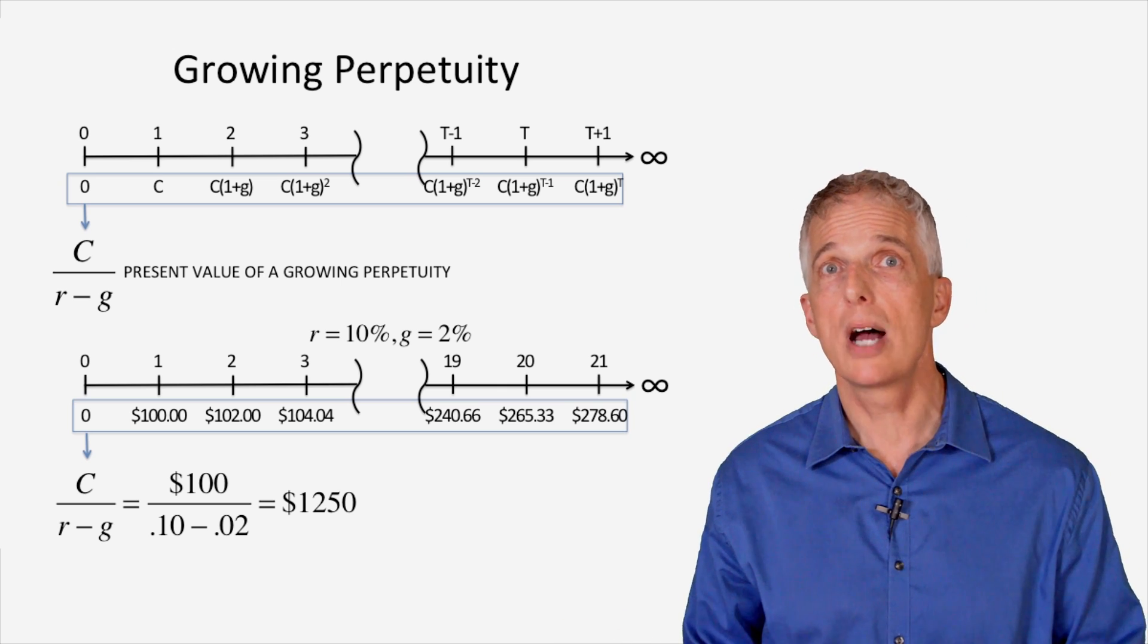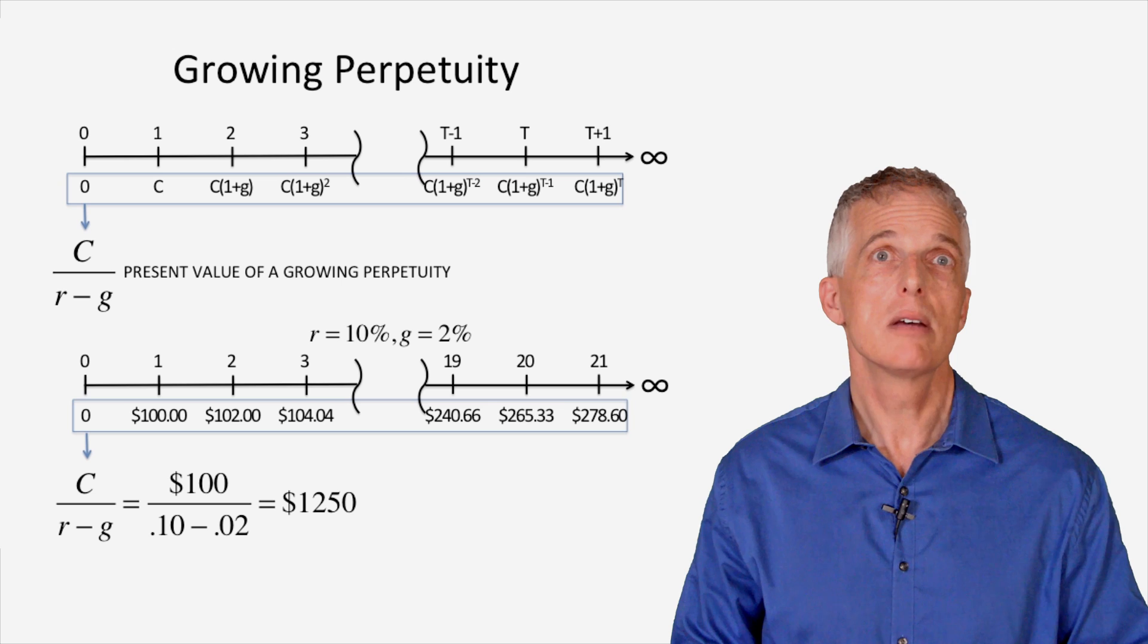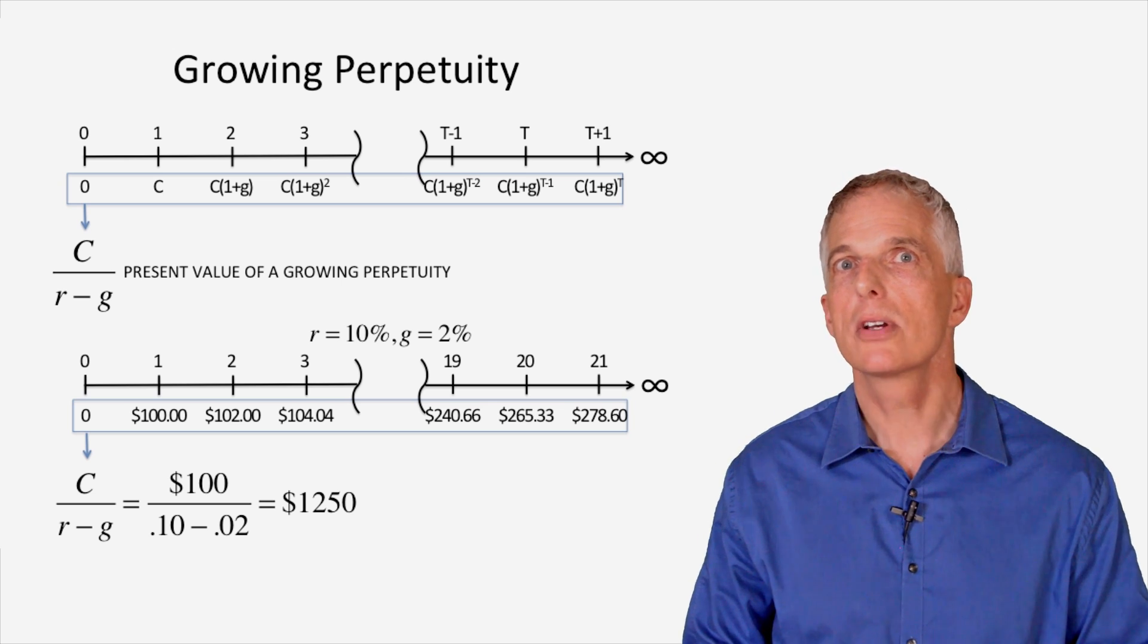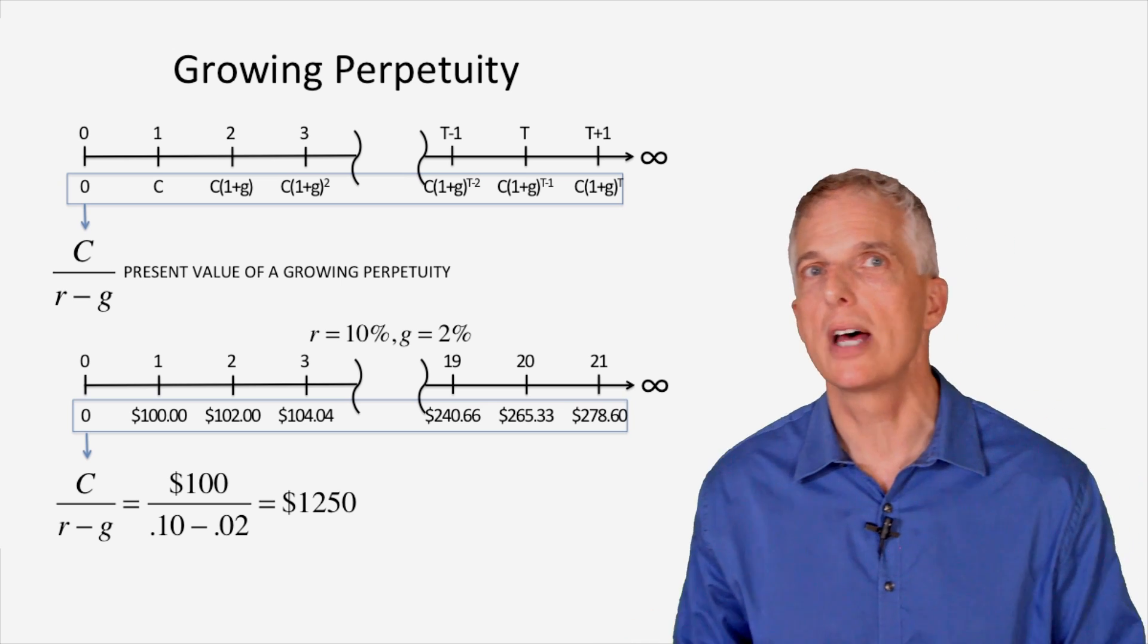Note that the growth rate for the promised cash flow payment, G, must be less than the prevailing interest rate, R, for the growing perpetuity to have a sensible valuation.